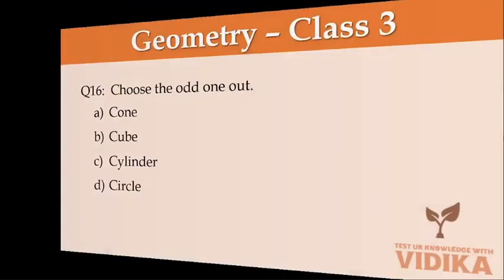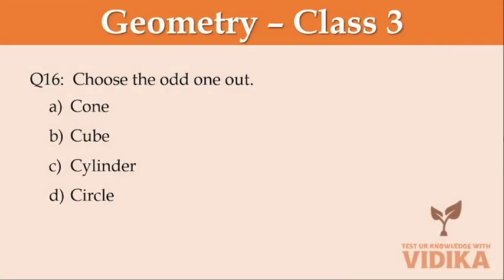Choose the odd one out. Option A cone, option B cube, option C cylinder, option D circle.